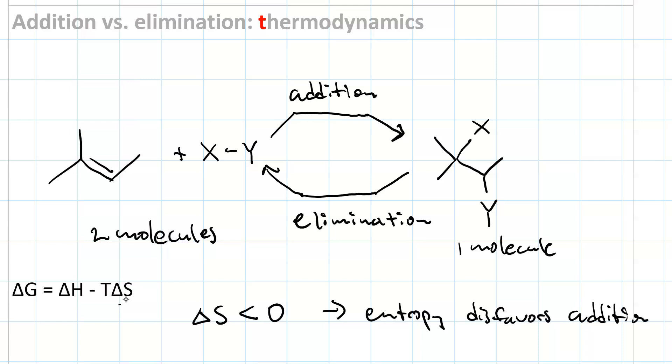What about delta H? Well, we have one, two, three, four, five sigma bonds, and one pi bond. On the left-hand side, on the right we have one, two, three, four, five, six sigma bonds. In general, sigma bonds are stronger than pi bonds. That means that delta H in the forward direction is negative. So enthalpy favors the reaction.